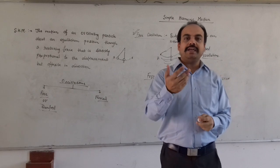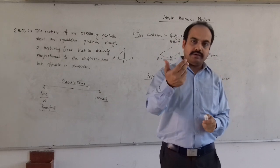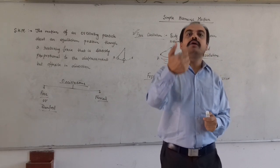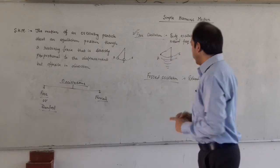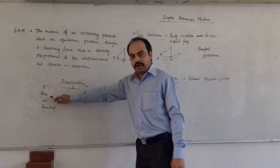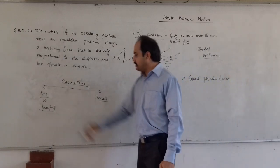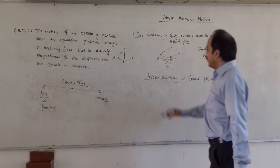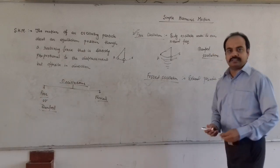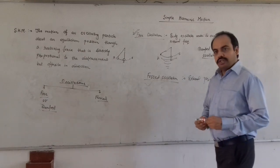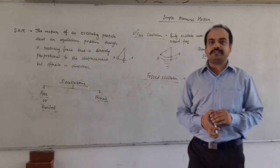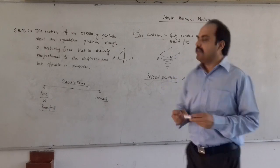Wall clocks oscillate under some periodic oscillations with a force from a battery. So there are two types of oscillations: one is free or damped oscillations and the other is forced oscillations. This is the basic introduction of simple harmonic motion.